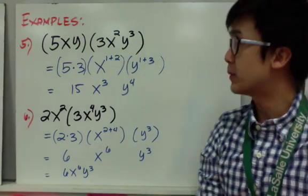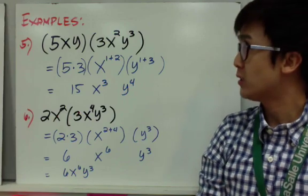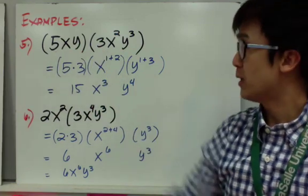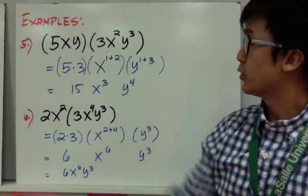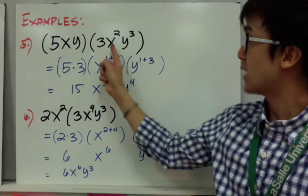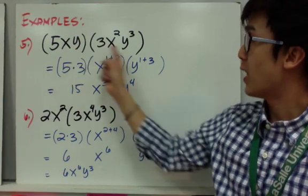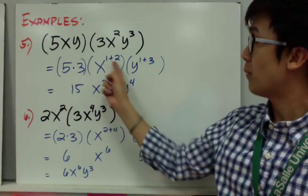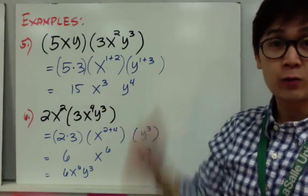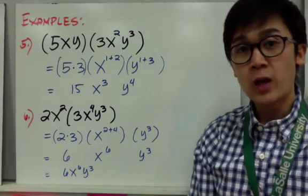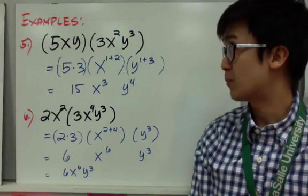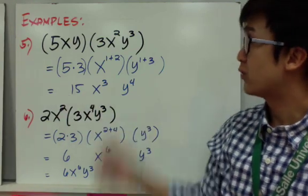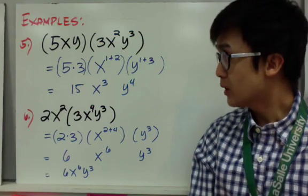For example number 5, we are multiplying two expressions. To simplify, I separated each term — the constants and the variables. So I have 5 times 3 as my first term, x times x squared as my second term, and y times y cubed as my third term. Simplifying: 5 times 3 is 15, x raised to 1 plus 2 is x cubed, and y raised to 1 plus 3 is y to the fourth. A good technique is to separate like terms so you won't get confused about what to add or multiply.